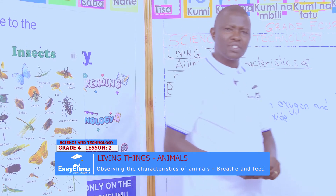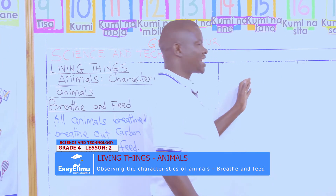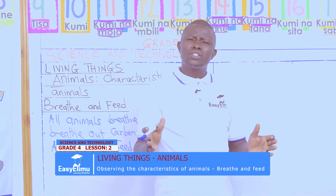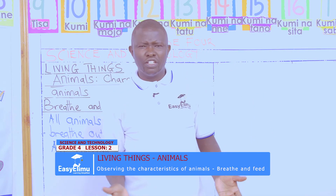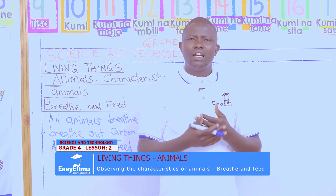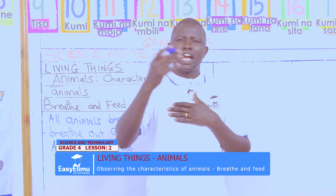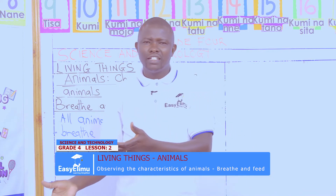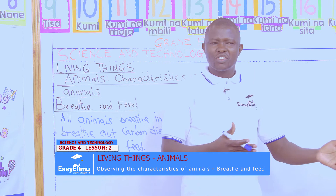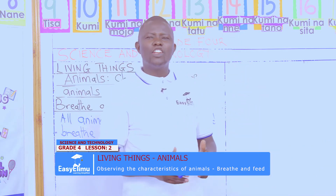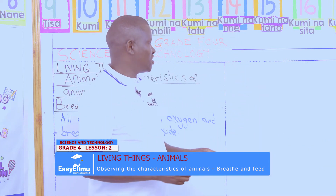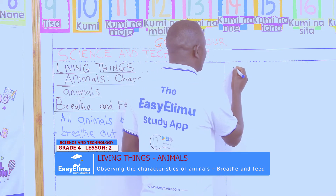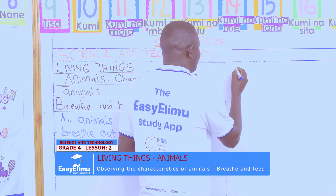In our groups, I would like to discuss the following: different animals feed on different types of food. For example, the food I eat, the cow may not eat. The food the cow eats, the dog may not eat. So different animals feed on different types of food. In our groups, let's discuss different animals with their different foods.